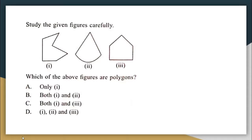Study the given figures carefully — which of the above figures are polygons? Figure 1 and figure 3 are both polygons. Figure 2 is not a polygon because it has one curved side. So the correct answer is option C — both 1 and 3 are polygons.